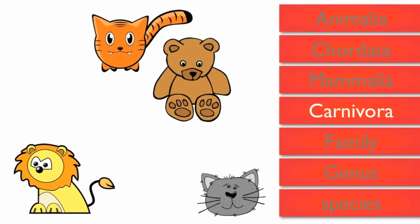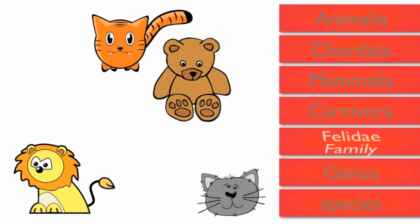Next, we have family. A lion is in the Felidae family. Members of this family have retractable claws, so the bear is removed.